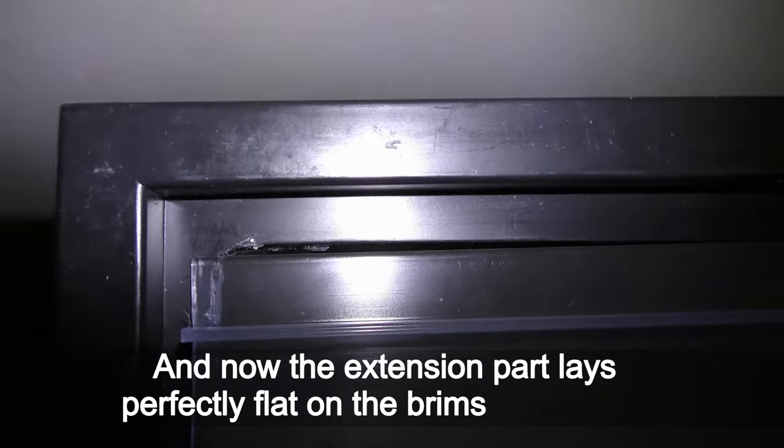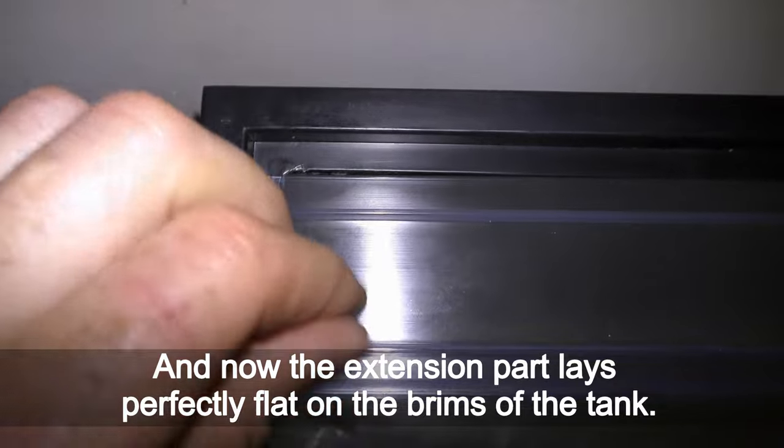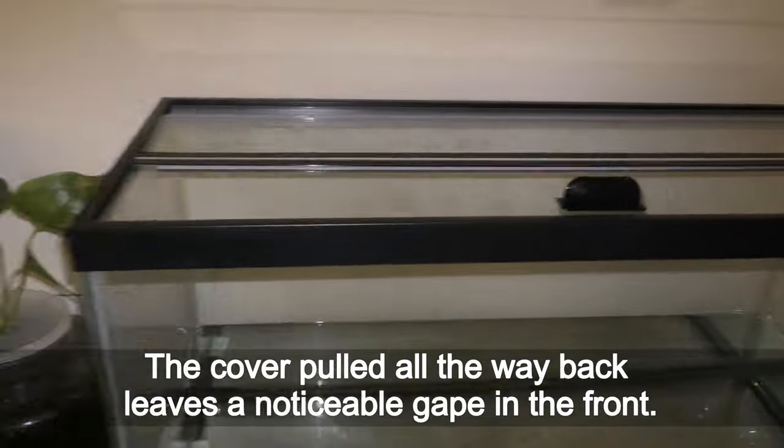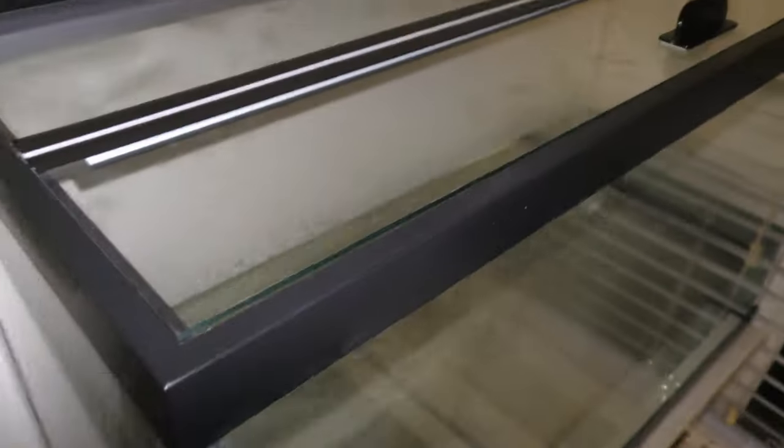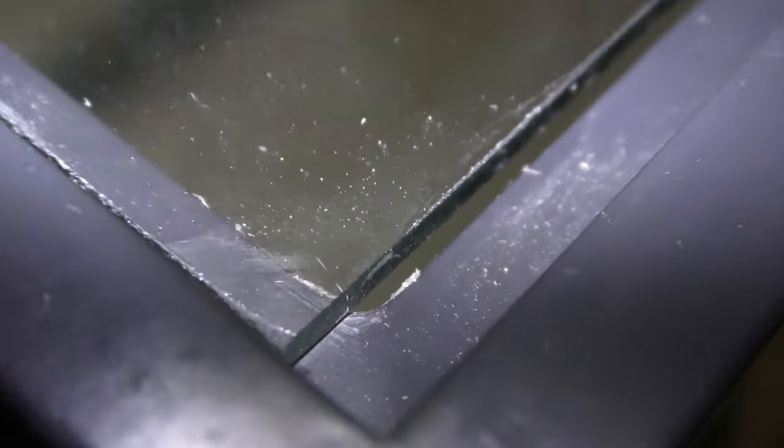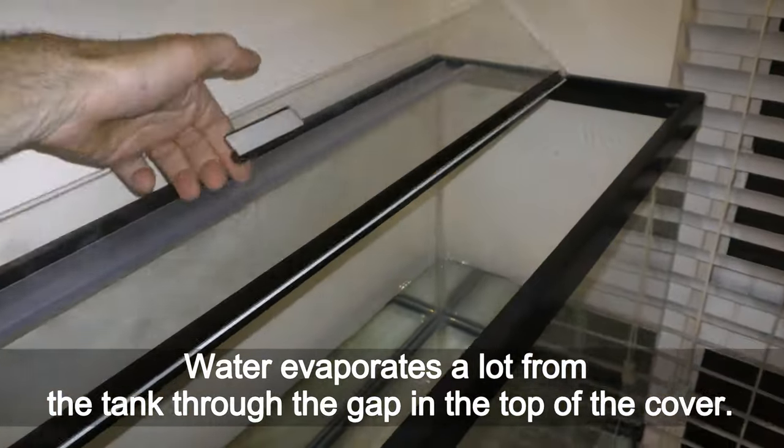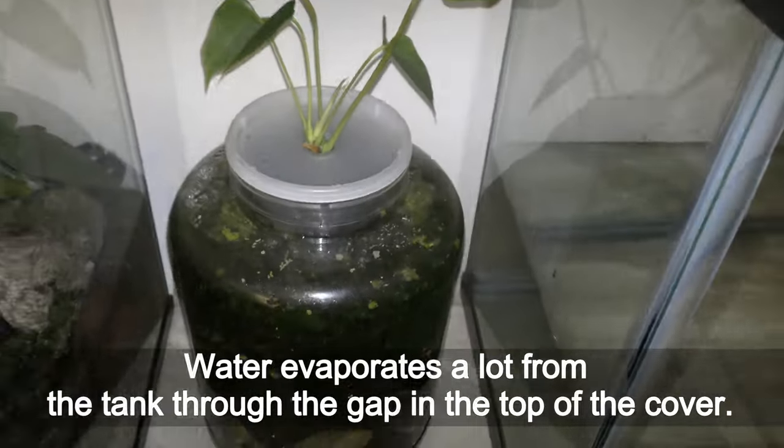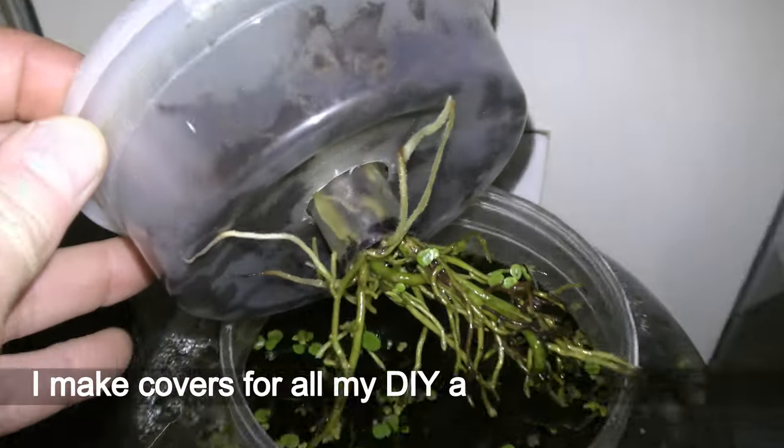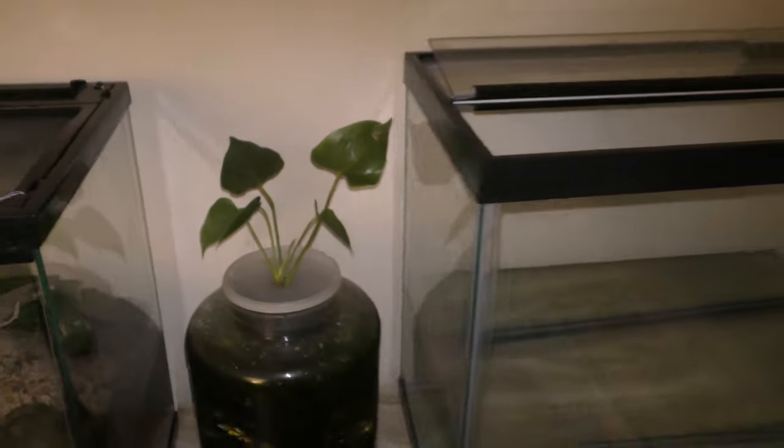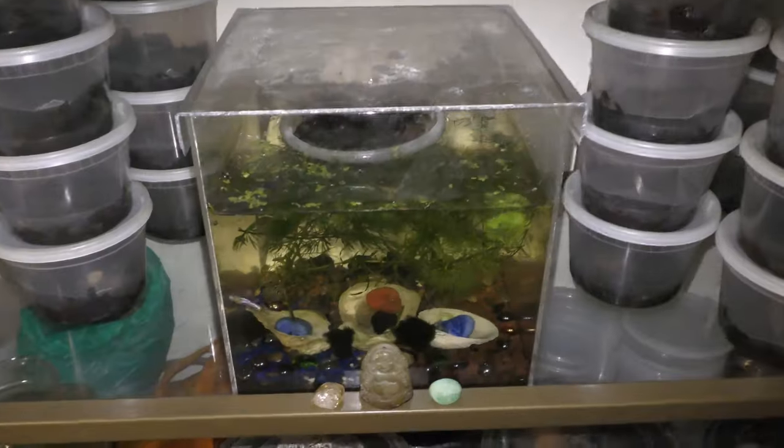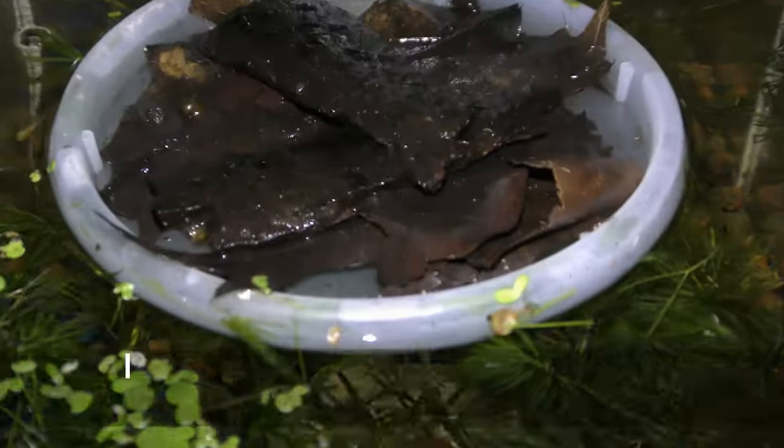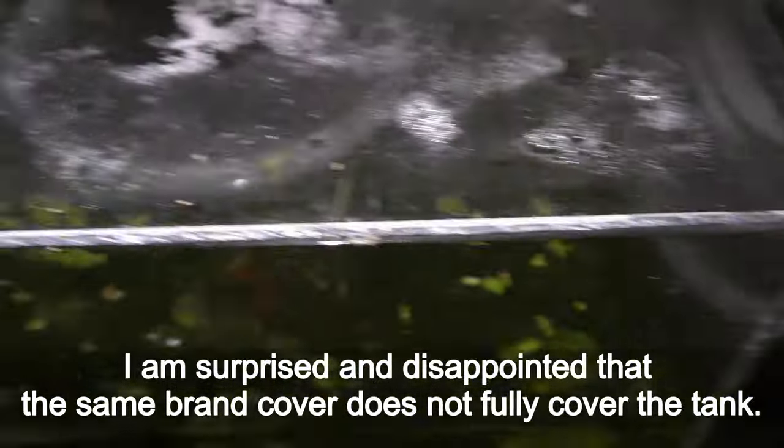I make the same cuts on the other side of the plastic extension part. And now the extension part lays perfectly flat on the brims of the tank. The cover pulled all the way back leaves a noticeable gap in the front. Water evaporates a lot from the tank through the gap in the top of the cover. I make covers for all my DIY aquariums to fit nicely. I am surprised and disappointed that the same brand cover does not fully cover the tank.